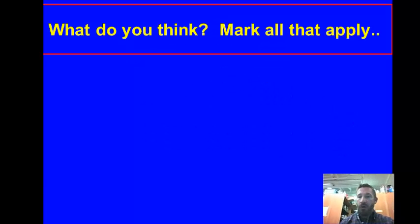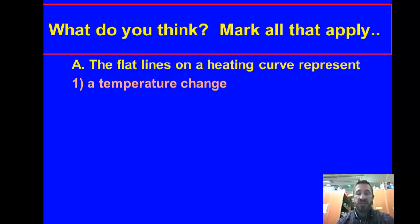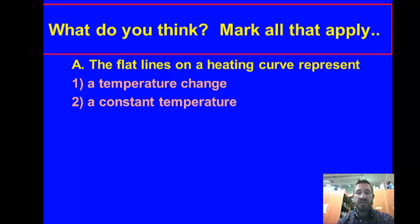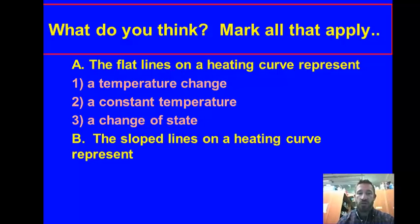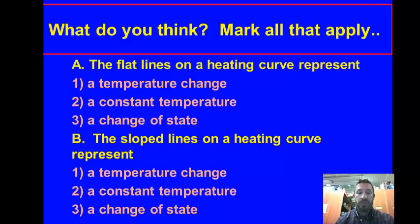Let's do some questions — mark all that apply. The flat lines on the heating curve represent: a temperature change, a constant temperature, or a change of state? Next question: the slope lines on a heating curve represent: a temperature change, a constant temperature, or a change of state?